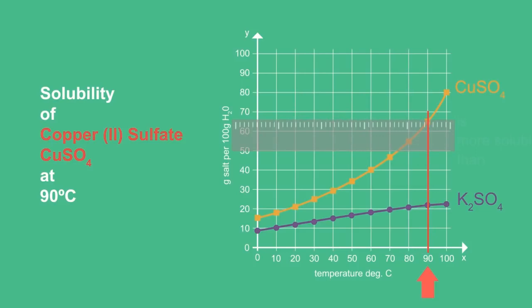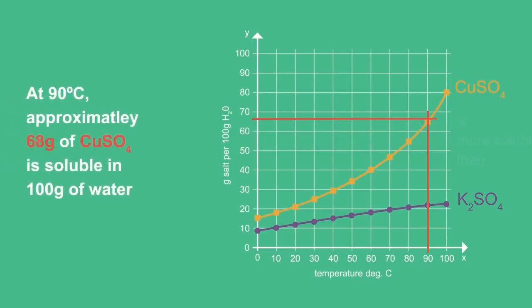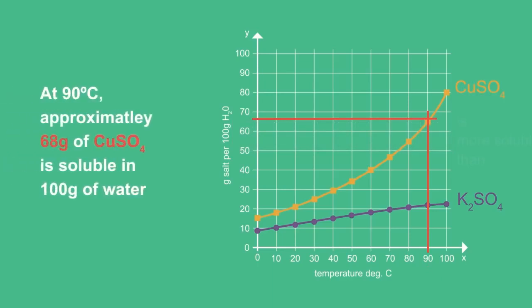Then draw a horizontal line from the point on the curve until it reaches the y-axis. At 90 degrees Celsius, approximately 68 grams of CO2 sulfate is soluble in 100 grams of water.